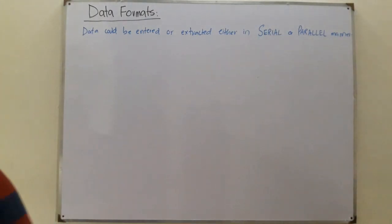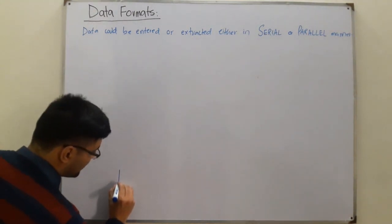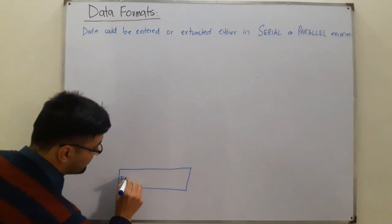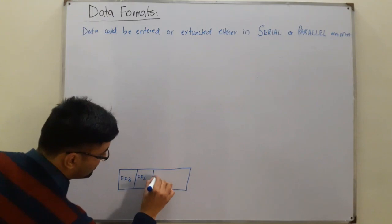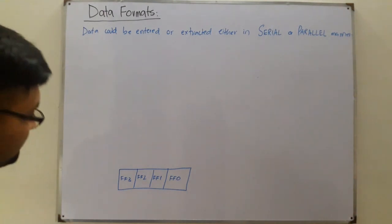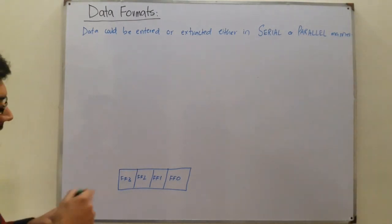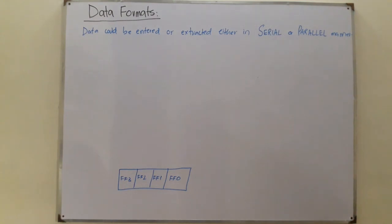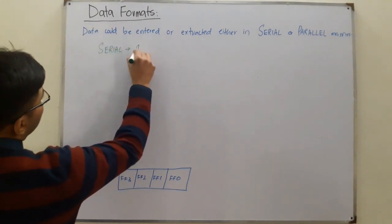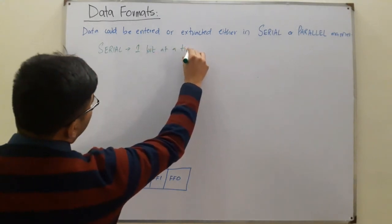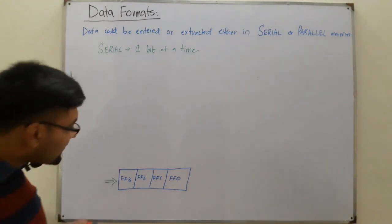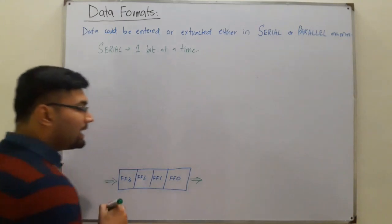Using the previous example of a four-bit flip-flop, let's say a four-bit register. It has four flip-flops: flip-flop three, flip-flop two, flip-flop one, and flip-flop zero. Serial means you provide one bit at a time — this is the serial input. Similarly, when extracting the data, you extract it one bit at a time.